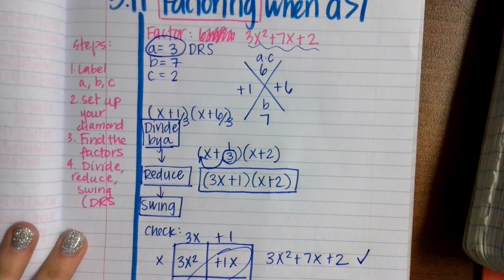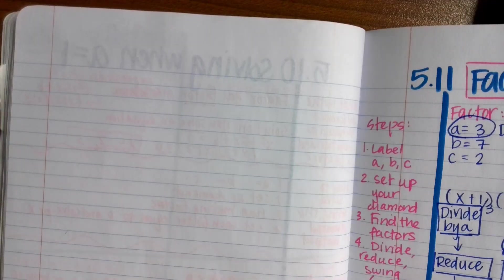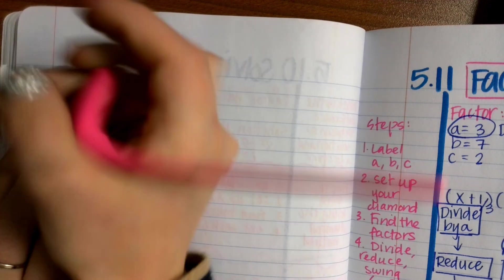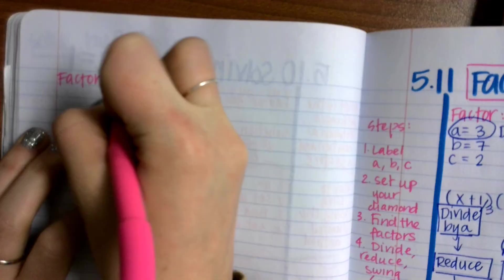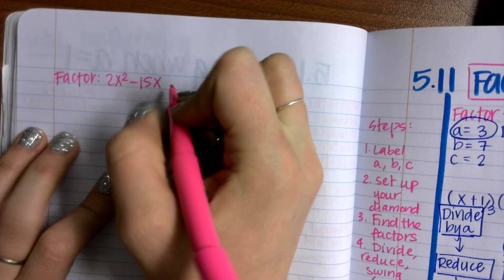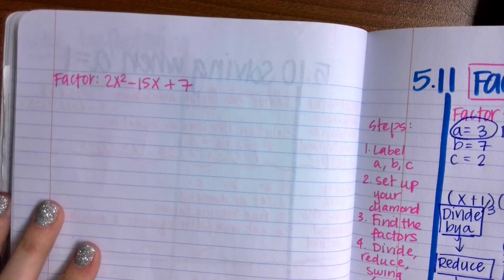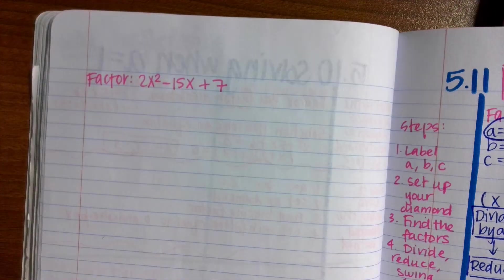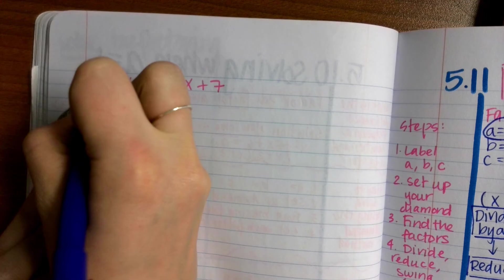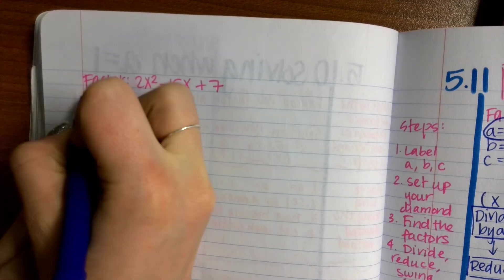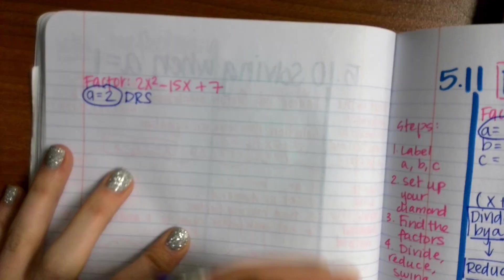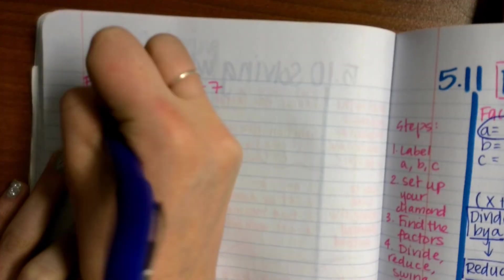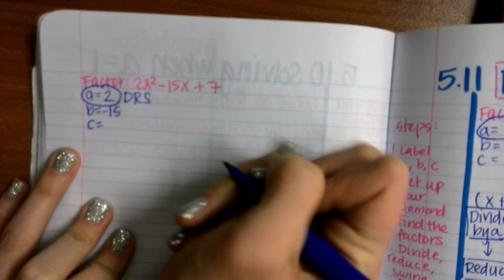Let's do one more over on the left side. Factor 2x squared minus 15x plus 7. First step, label my A, my B, and my C. A equals 2. Please circle that and put DRS since we have to divide, reduce, and swing with our A equals 2. B equals negative 15, C equals 7.